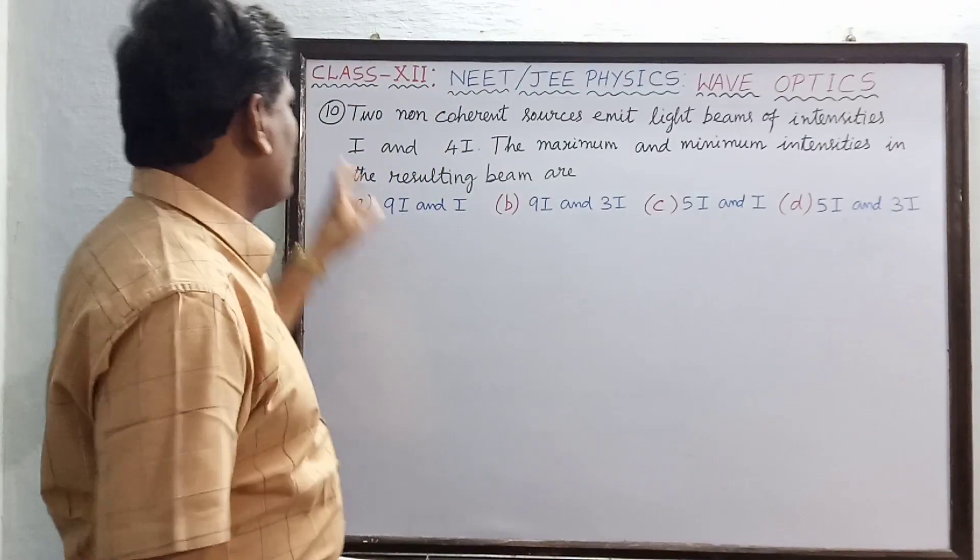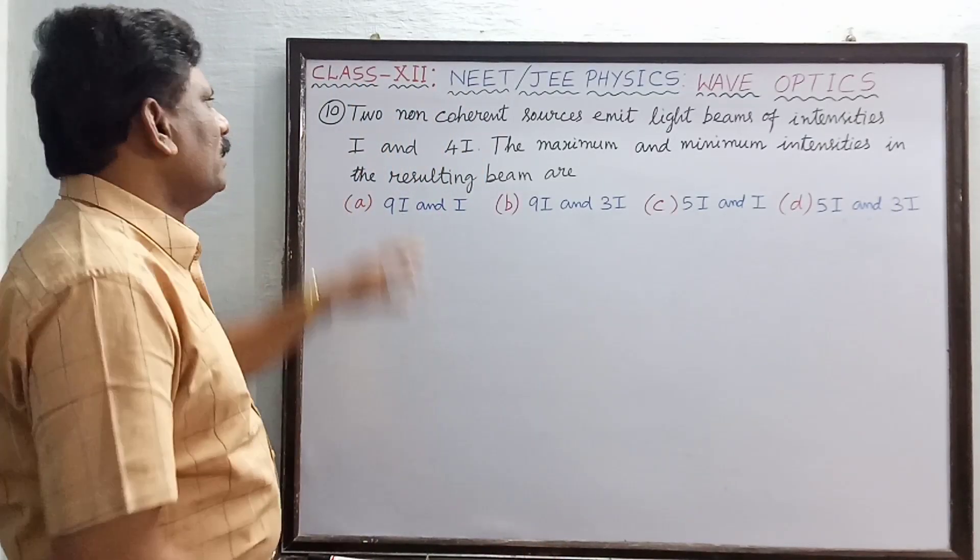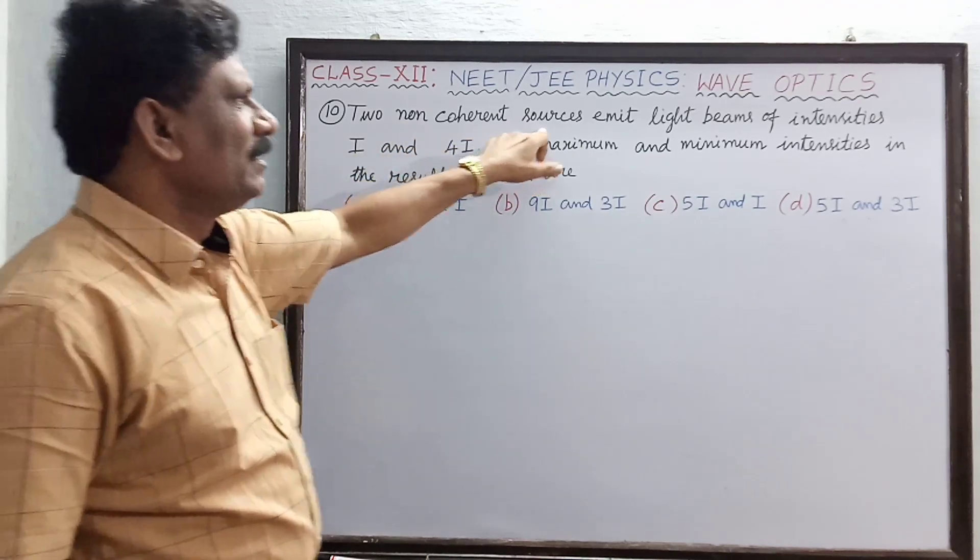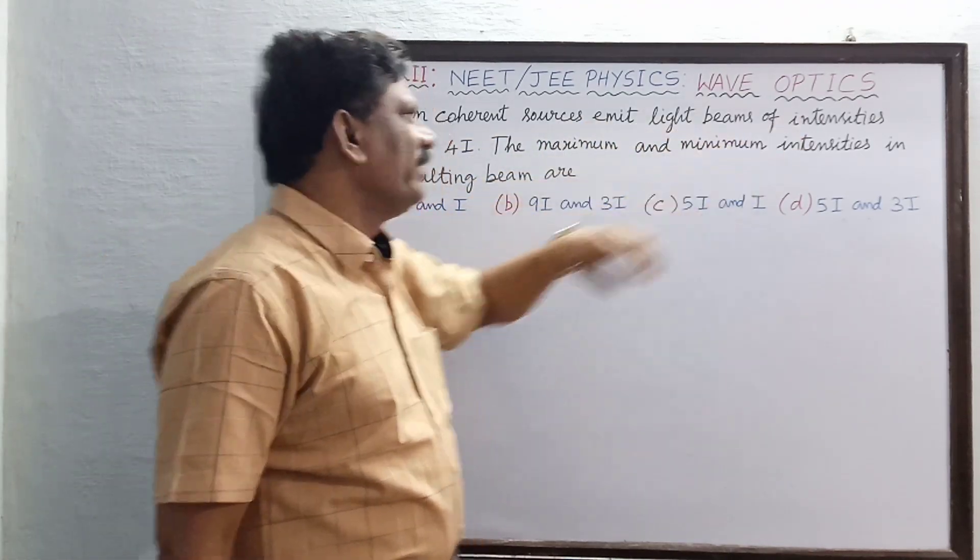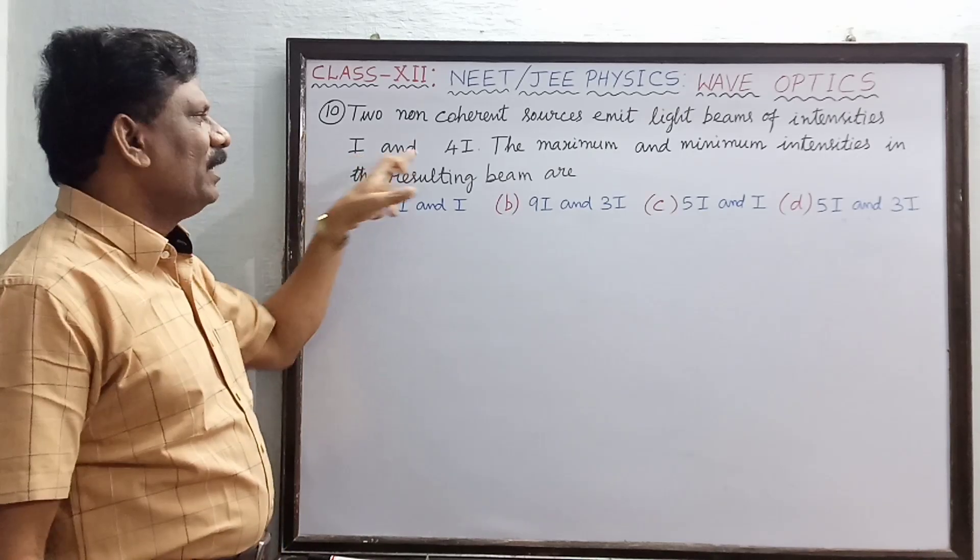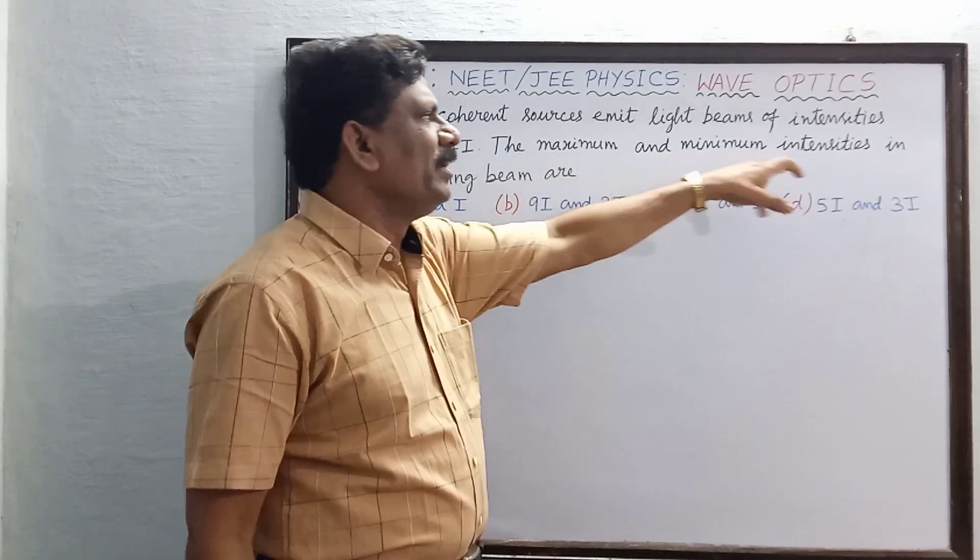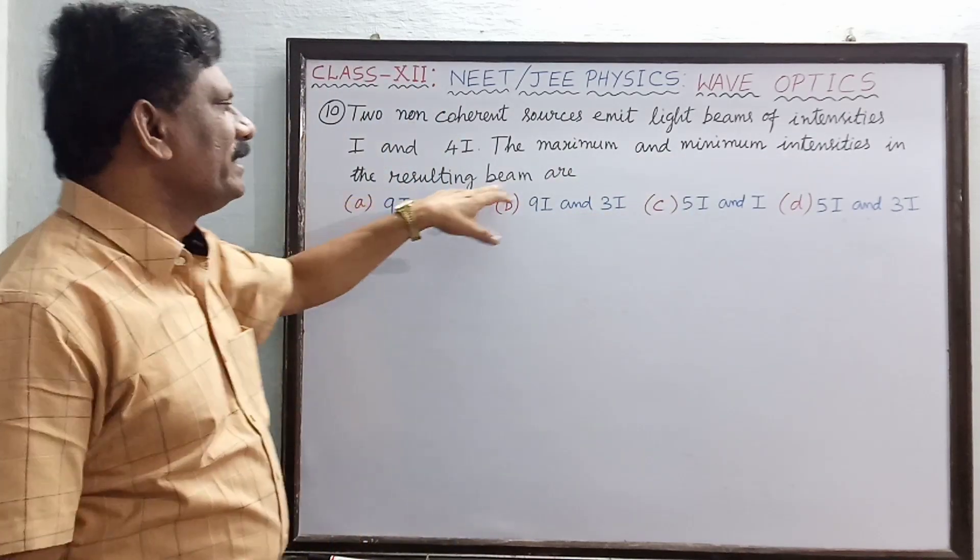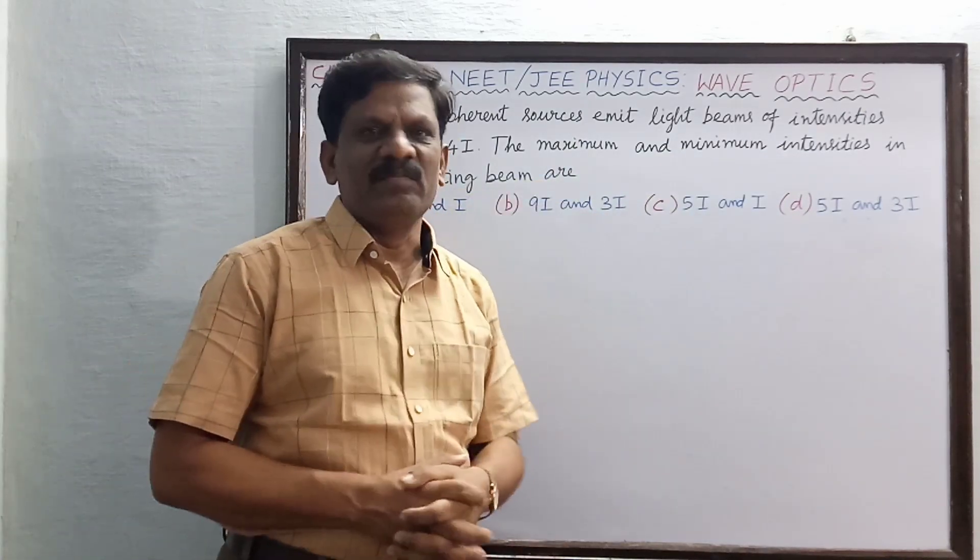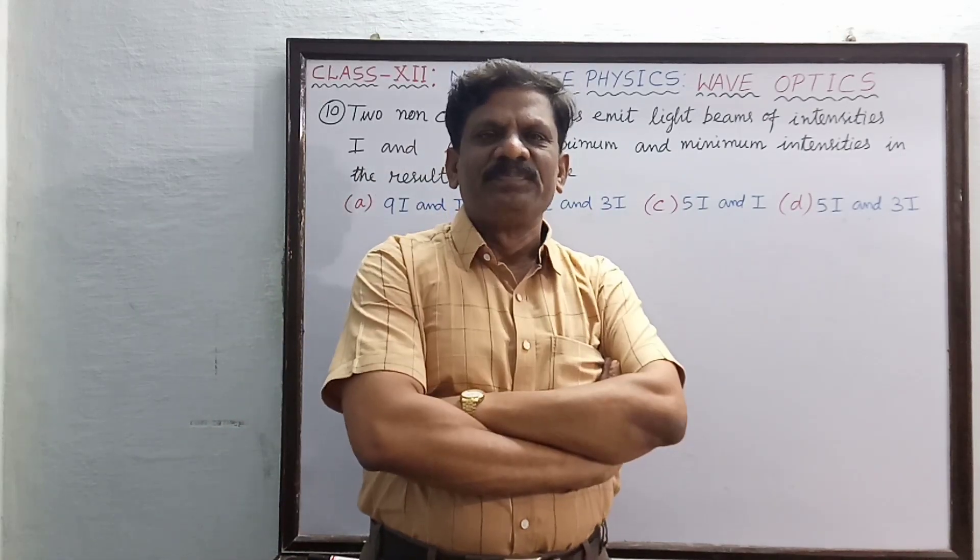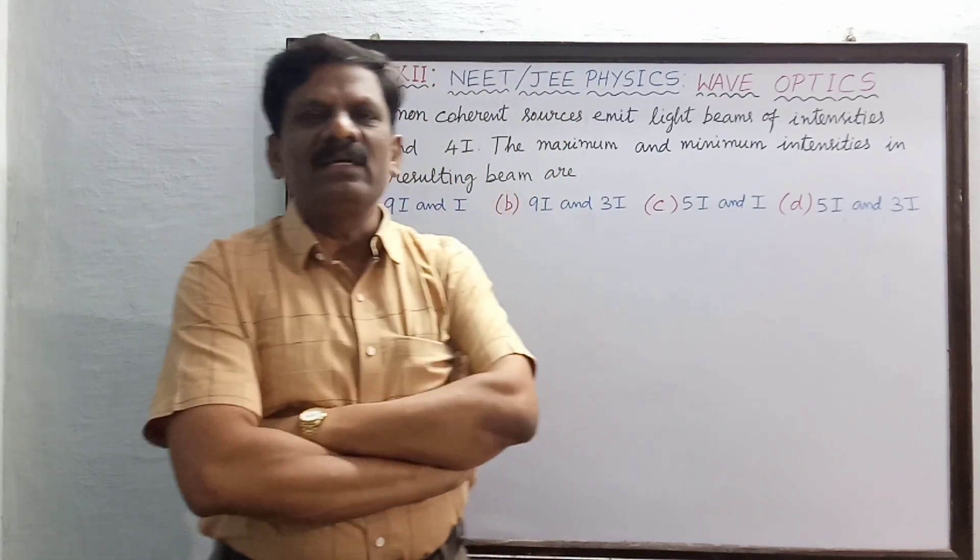Hi students, problem number 10: two non-coherent sources emit light beams of intensities I and 4I. The maximum and minimum intensities in the resulting beam are to be determined. Now in your textbooks you must have studied the condition for I maximum and I minimum for coherent sources only, is it not?